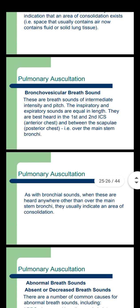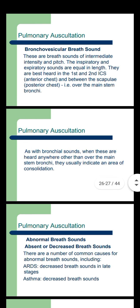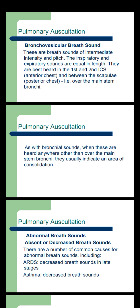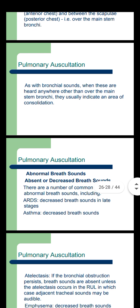Now I am coming to discuss with you bronchovesicular breath sounds. These are breath sounds of intermediate intensity and pitch. The inspiratory and expiratory sounds are equal in length. They are best heard in the first and second intercostal spaces of the anterior chest and between the scapulae of the posterior chest, i.e. over the mainstem bronchi. As with bronchial sounds, when these are heard anywhere other than over the mainstem bronchi, they usually indicate an area of consolidation.